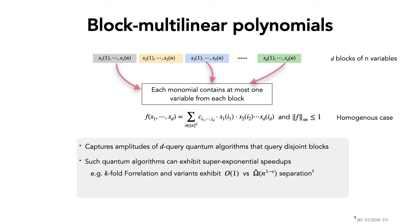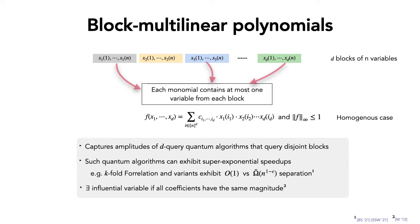These algorithms look quite special, but even they can exhibit super-exponential speedups. For instance, problems like the k-fold forrelation and its variants exhibit the maximal possible separation between quantum and classical algorithms. Even for this special case of block multilinear polynomials, the Anderson-Banis conjecture is mostly open; the only known case is when all coefficients have the same magnitude.